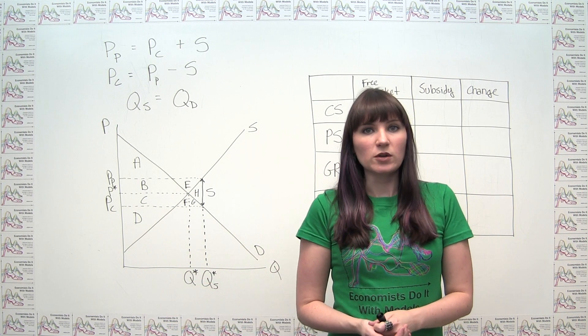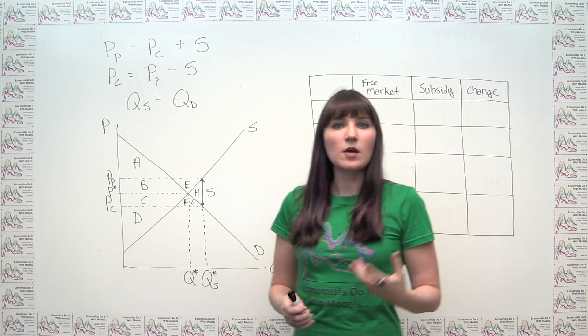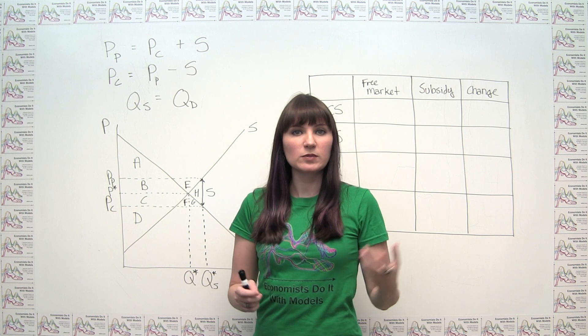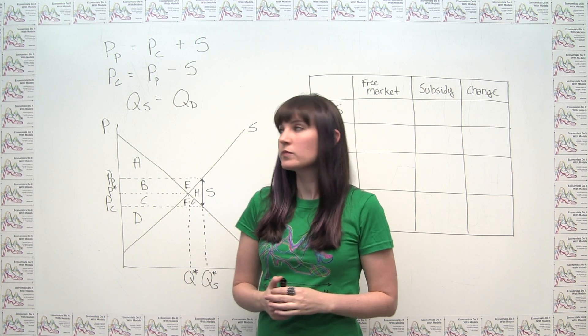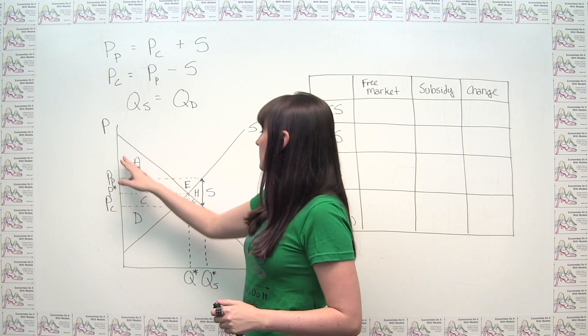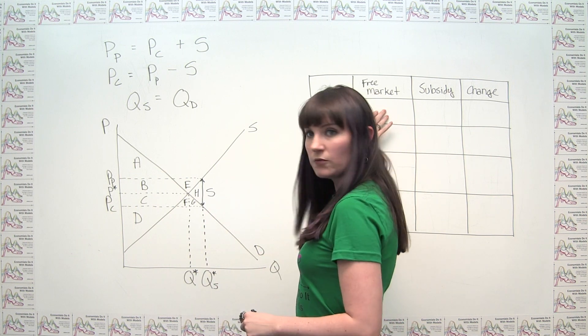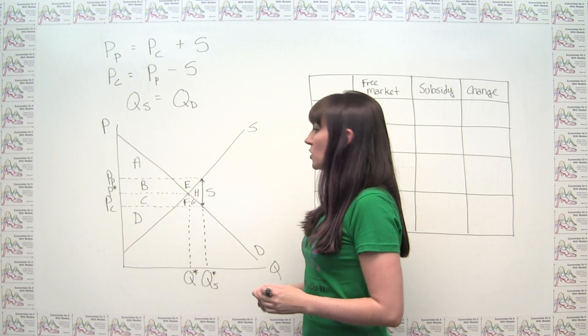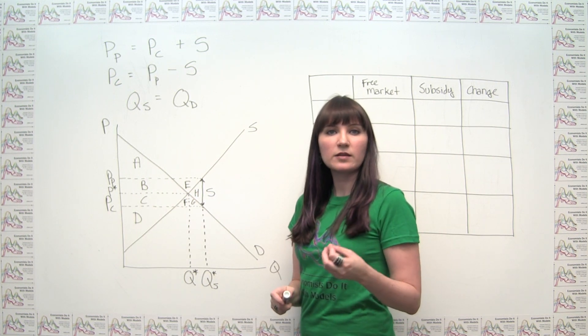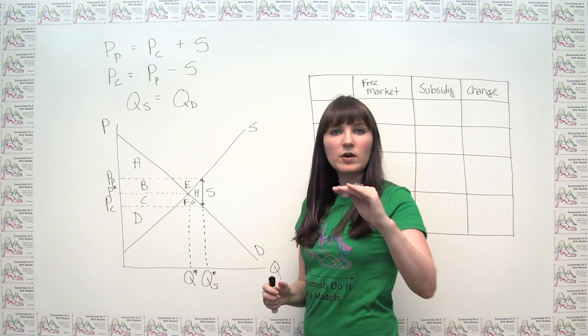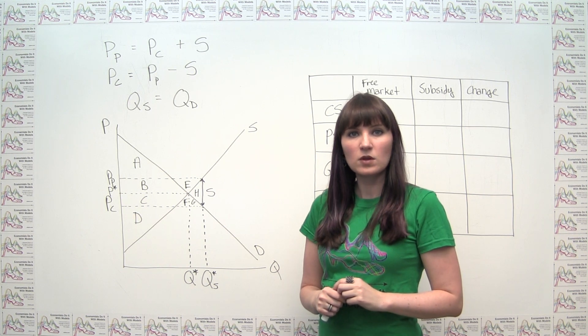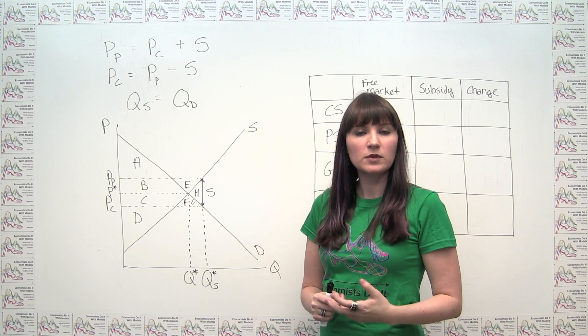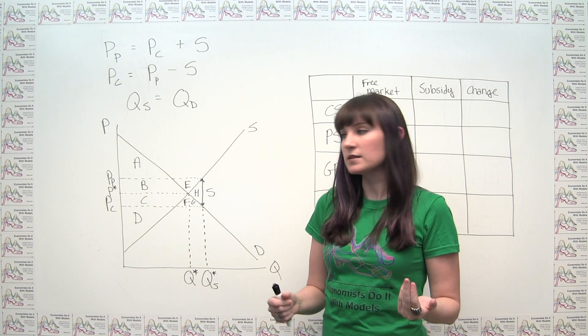So analyzing this is pretty straightforward, and it just relies on the three rules that we know about consumer surplus and producer surplus. So we can think about consumer surplus in our free market. Consumer surplus is just the area above the price that the consumer pays, below the demand curve, and to the left of the quantity that's being transacted.